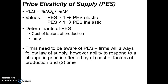The law of supply always applies: if the price of a product goes up, quantity supplied will go up, and if price decreases, quantity supplied will decrease — firms want to produce products that sell at higher prices. Two factors affect a firm's ability to respond to price changes. The first is the cost of factors of production. If those costs are high, it's very difficult for a firm to increase production even when prices go up and they want to respond.